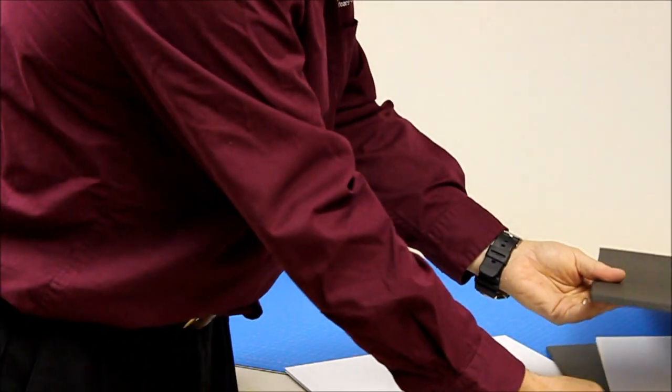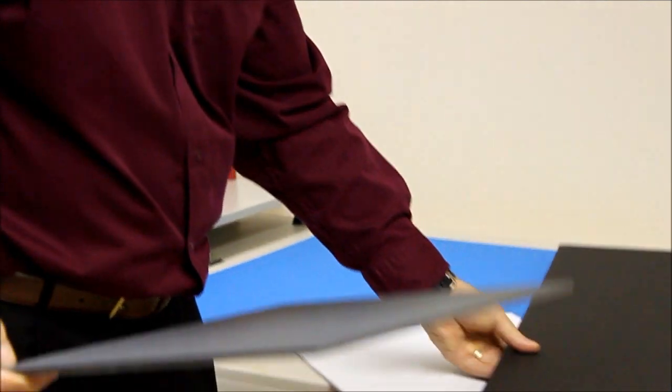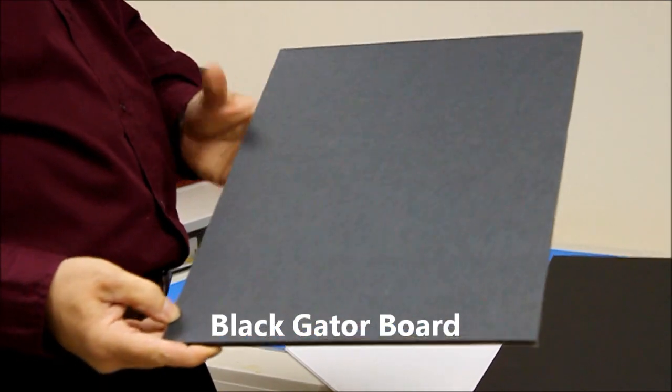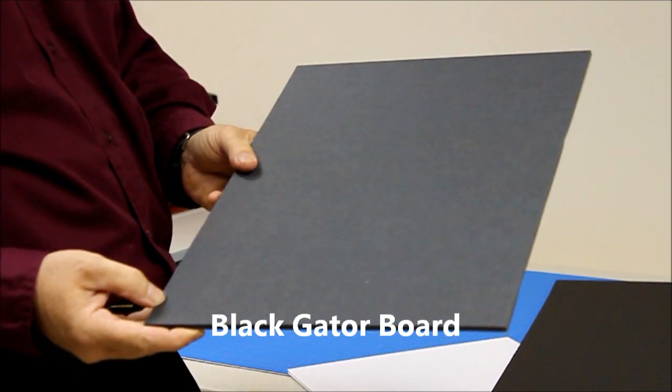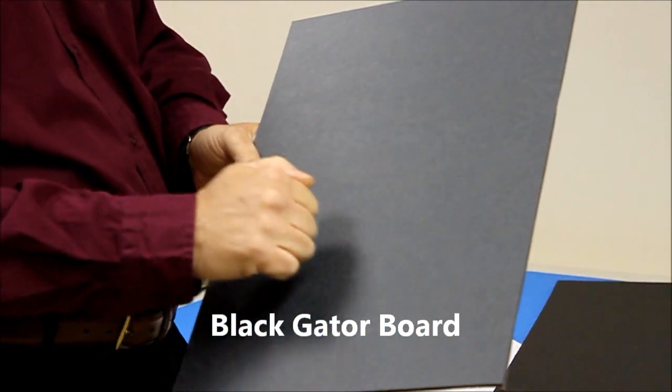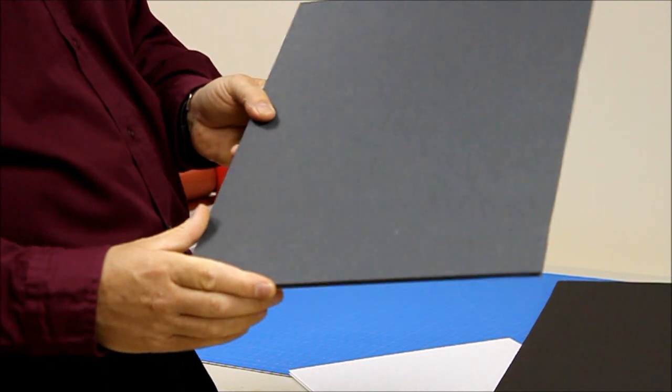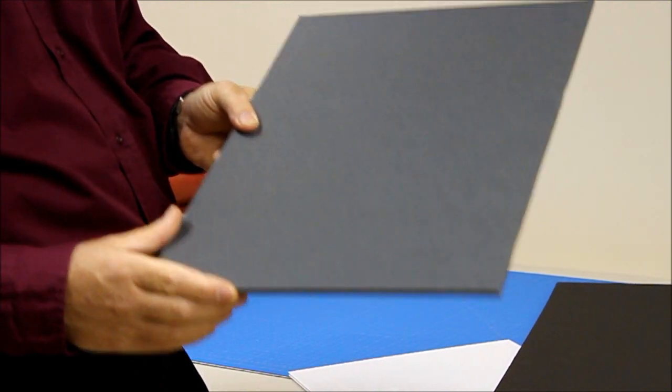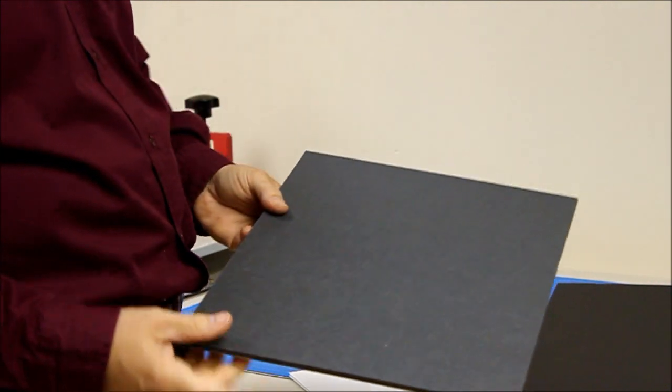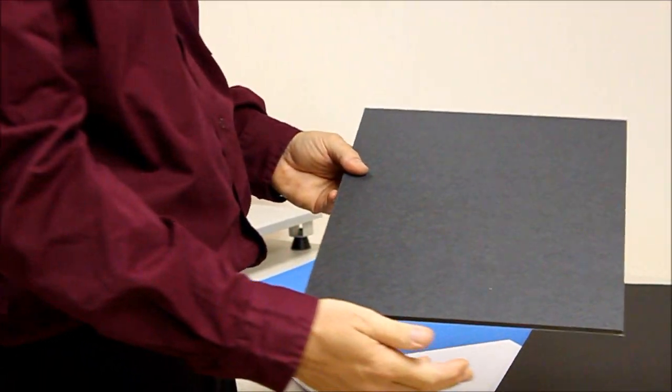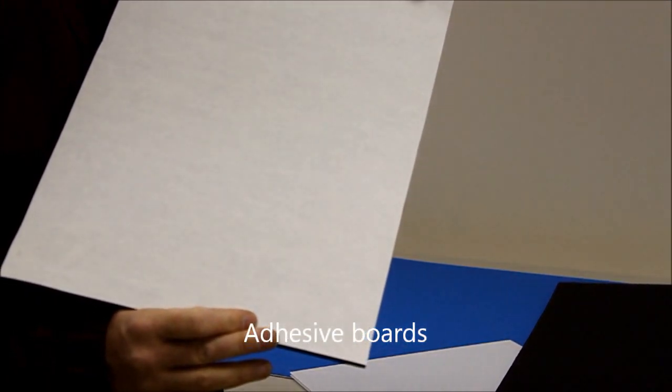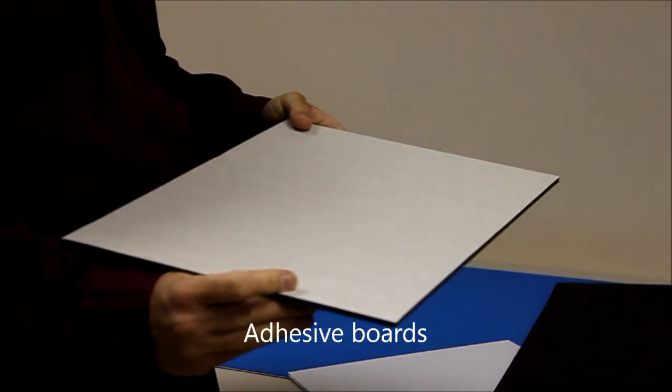The most rigid part of our product line is gator board, which uses a wood impregnated paper for the surface. It's very hard and it's very rigid. It would be our flattest board. It would also be our most durable board. All these boards come white or black. They all come plain and with adhesive on them and can also be made into cold pouch board.